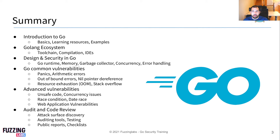We're going to then discuss about all the design and security features that have been put in place in Go that are already there by default. This includes giving you a bit more detail about the Go runtime, memory, and garbage collection, as well as speaking about concurrency and especially error handling, which is something pretty important for the next part of the training.